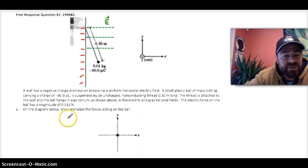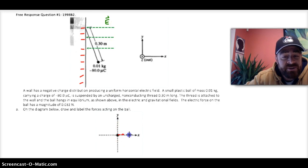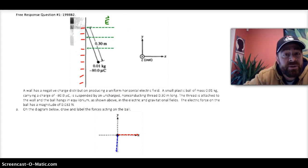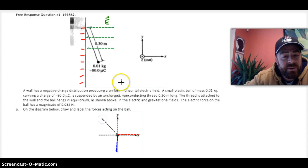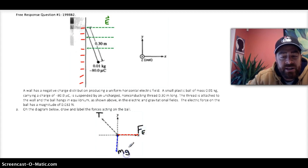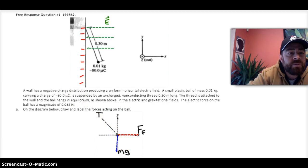The first question asks to draw the different forces acting on the object. We know there's a repelling force due to the presence of those negative charges on the wall that's pushing to the right. There's also a weight force or the force of gravity acting straight down. And then there's a force acting up and to the left — this is the tension due to the string being attached to the ball. I'll label those as F sub T for tension, F sub E for the electric force, and MG for gravity.